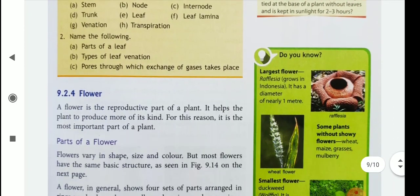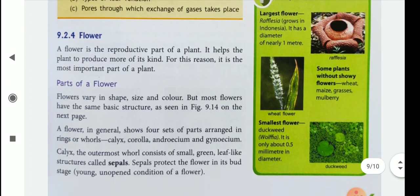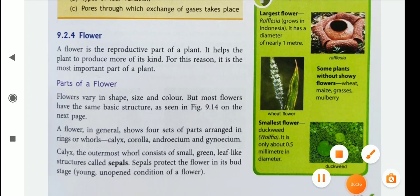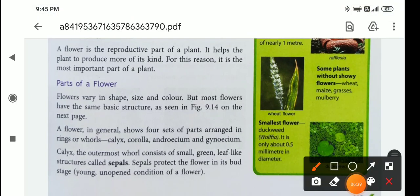Now let's come to the flower. A flower is the reproductive part of the plant. It helps the plant to produce more of its kind. For this reason, it is the most important part of a plant.